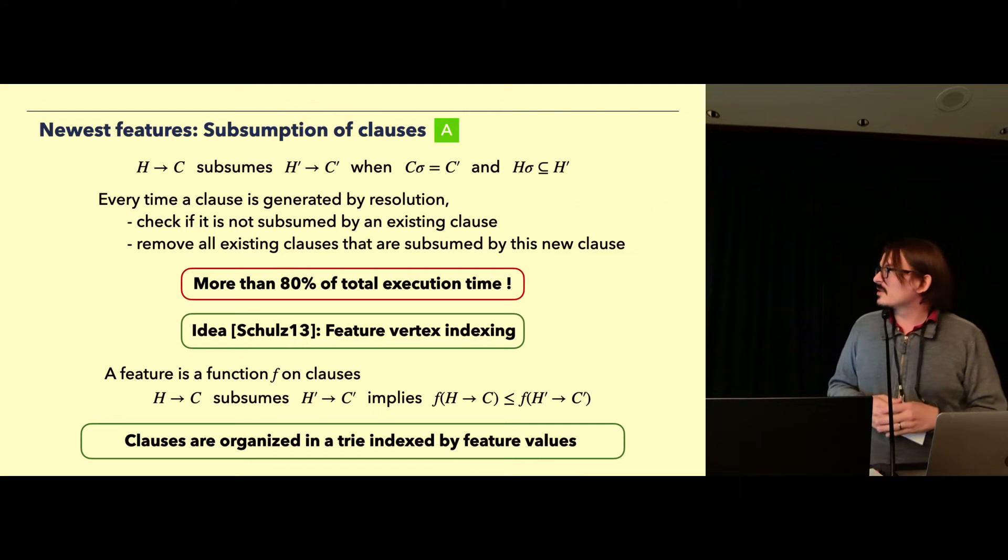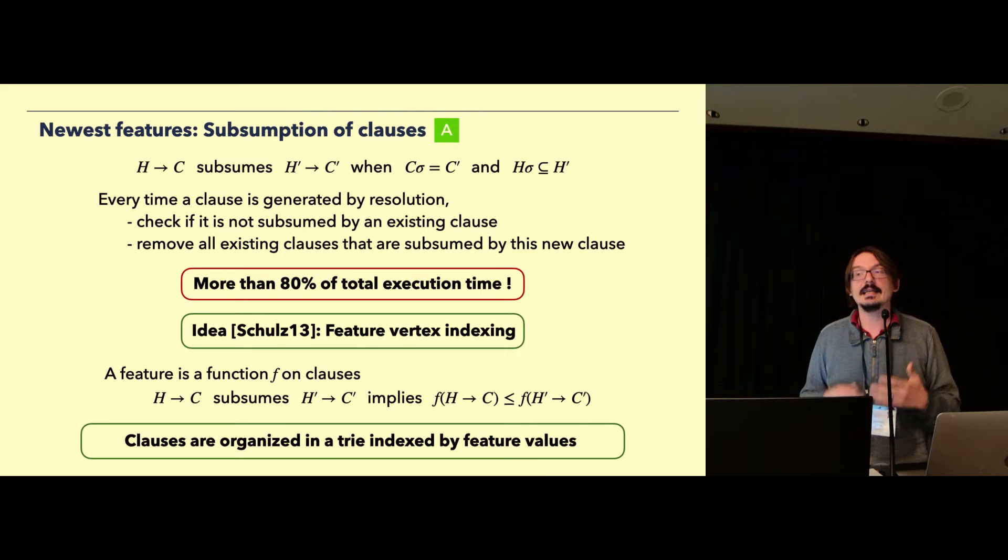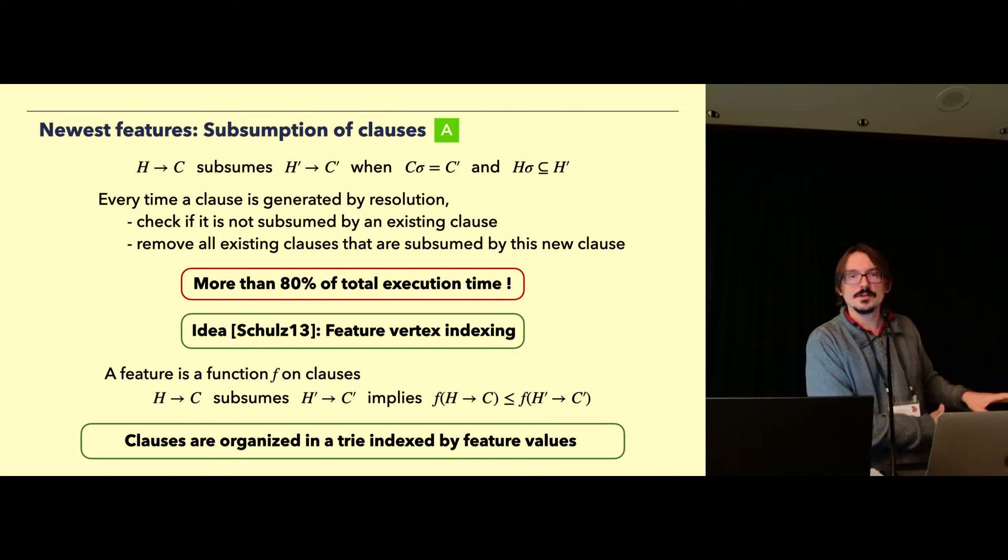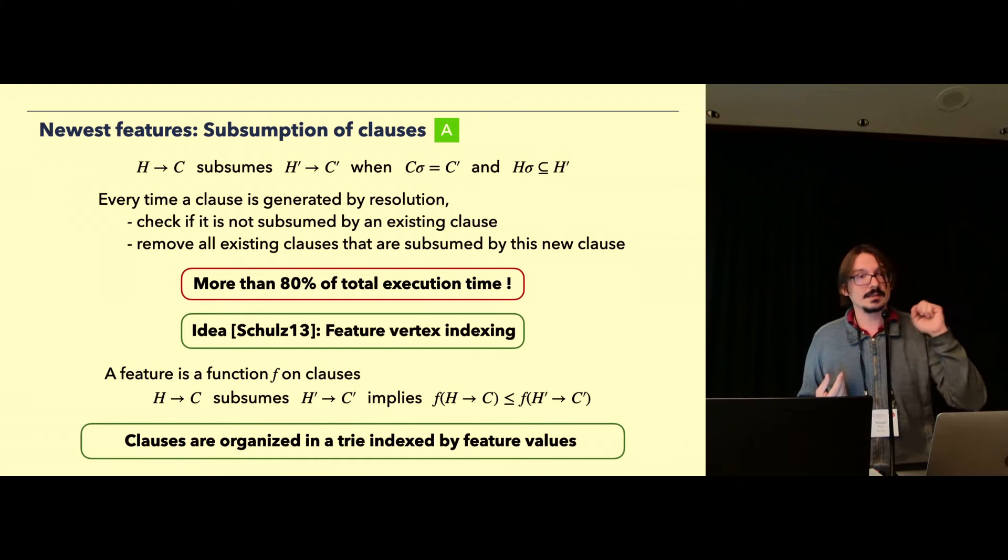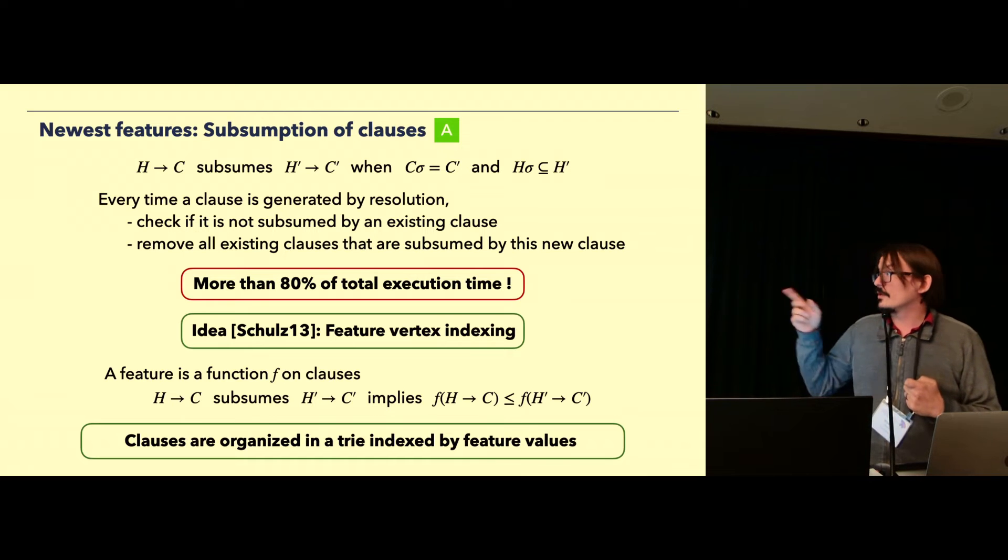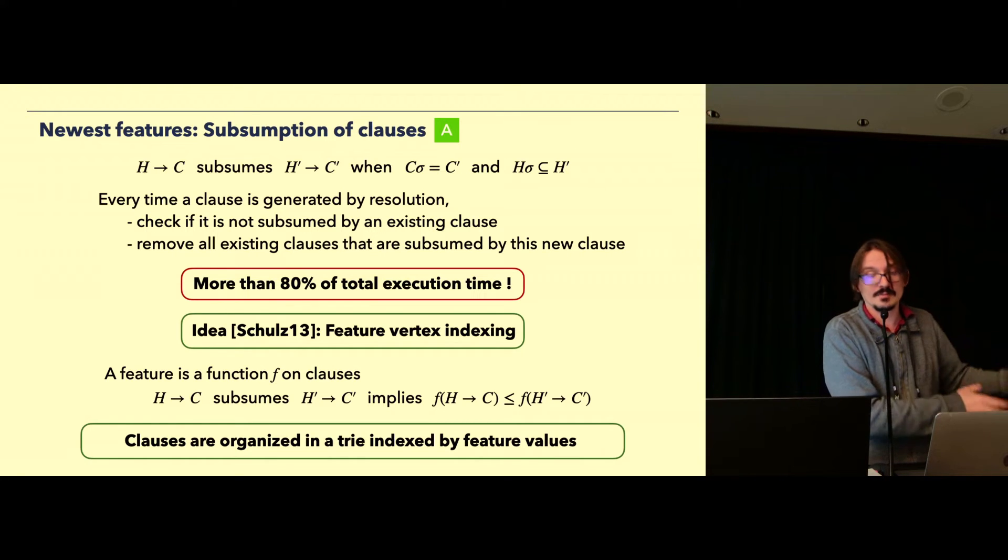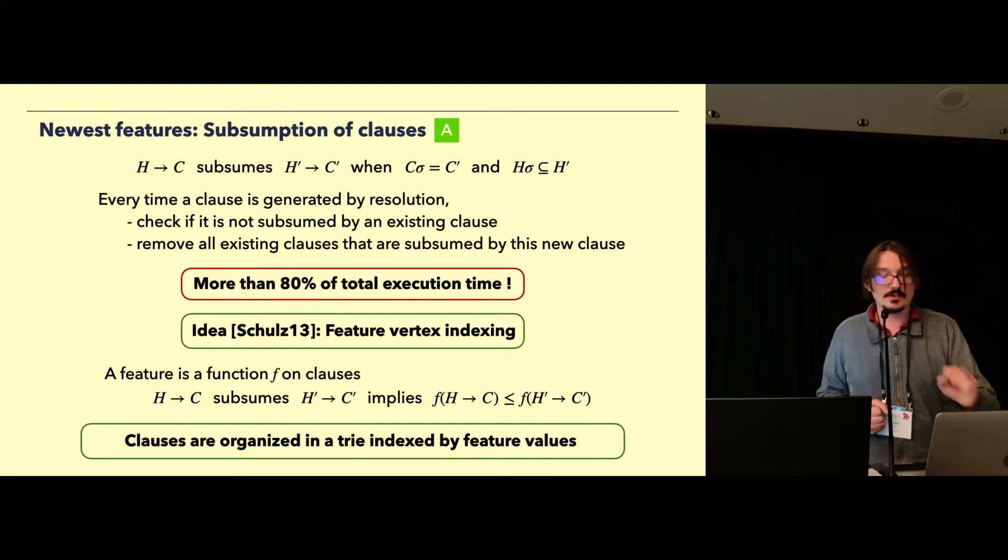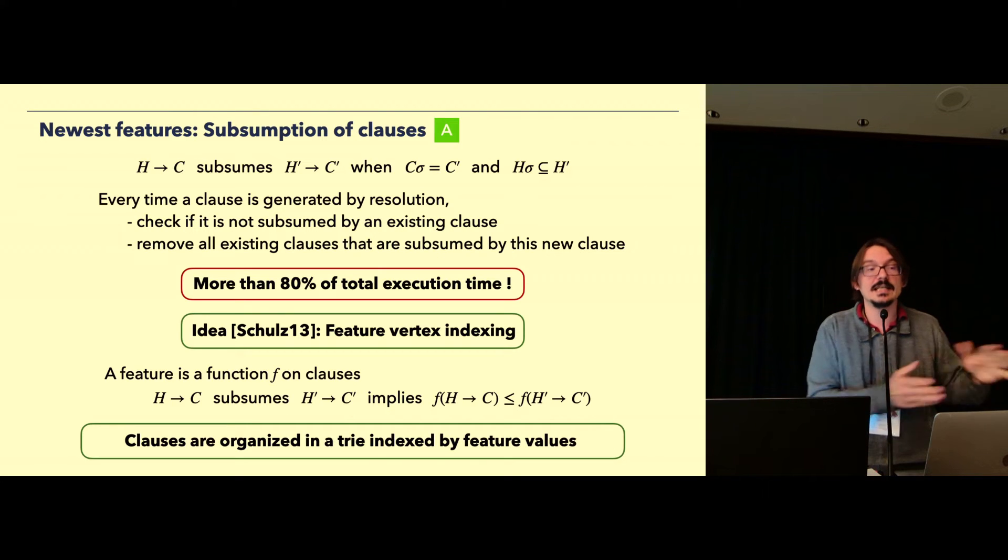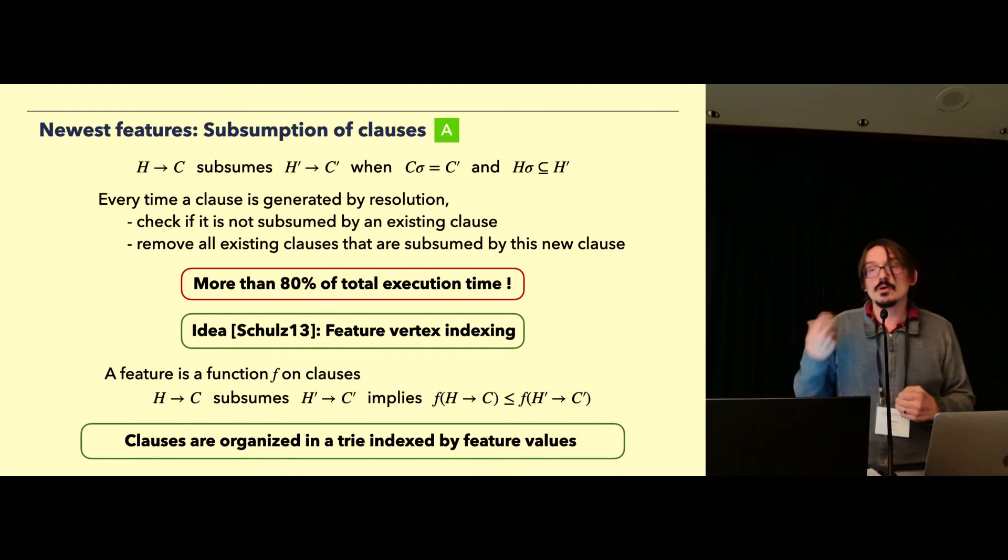So what we looked at is we looked at a paper by Schulz in 2013 that introduced the notion of feature vector indexing. And here the idea is fairly simple. Instead of applying always the subsumption, first let's try to find a small function F that computes some element on your clause, like for example, the number of symbols in it. And this function should satisfy the following property: if the clause HC subsumes the clause H prime C prime, then the application of F on HC should be smaller than the application of F on H prime C prime. And so what we can do now is that instead of always applying the NP-hard problem, we first compute on the Horn clauses the function F, check if the equality holds. If it doesn't hold, then we don't even need to apply the NP-hard problem because we know that the test will always fail. And just this simple idea, in fact, once you organize your clauses as a tree indexed by the feature value, provides a huge speedup in ProVerif.